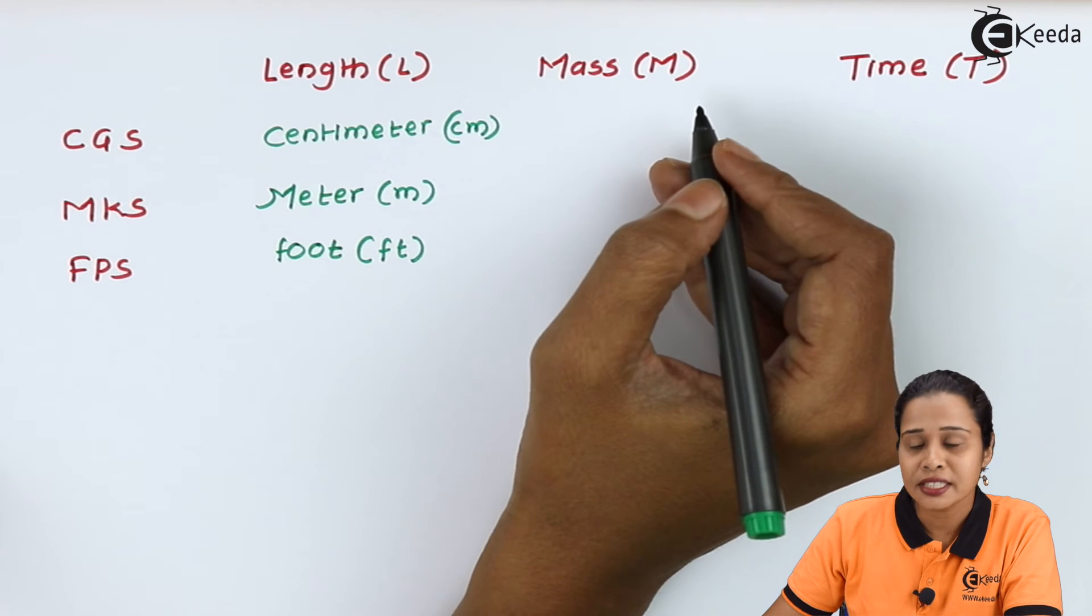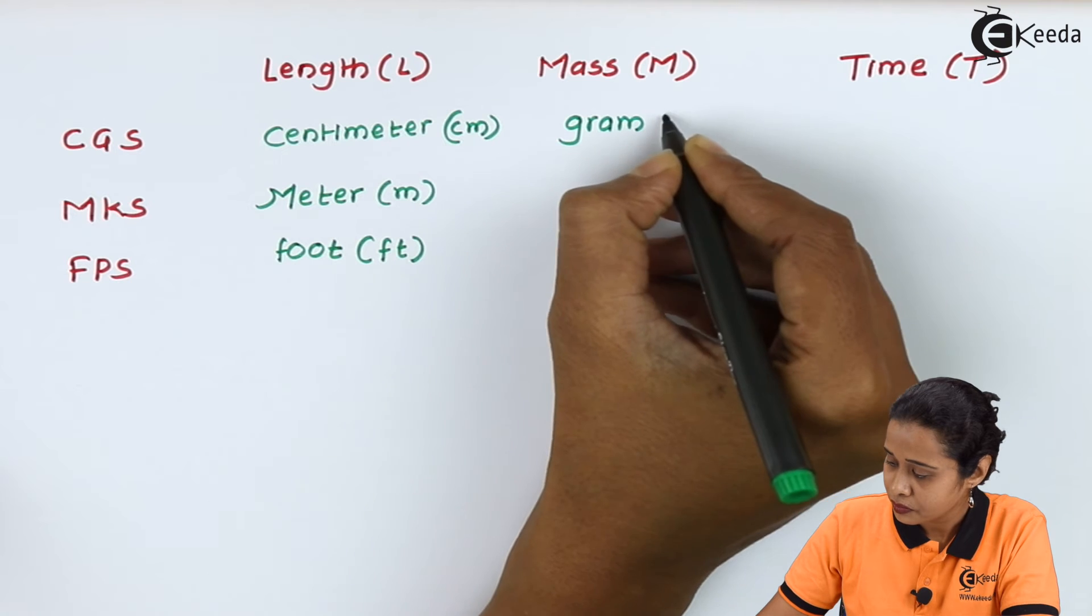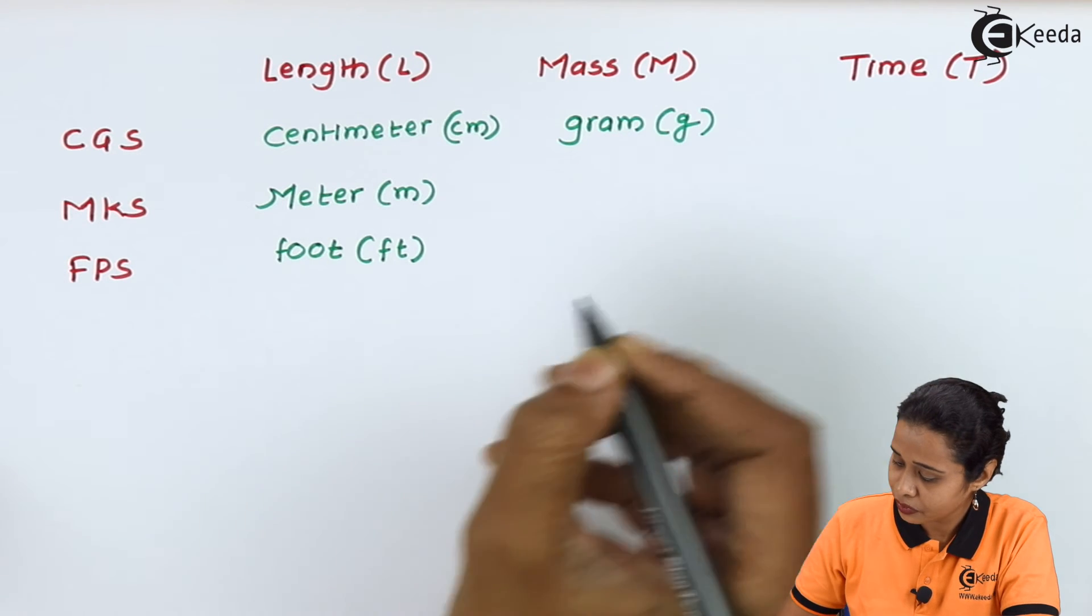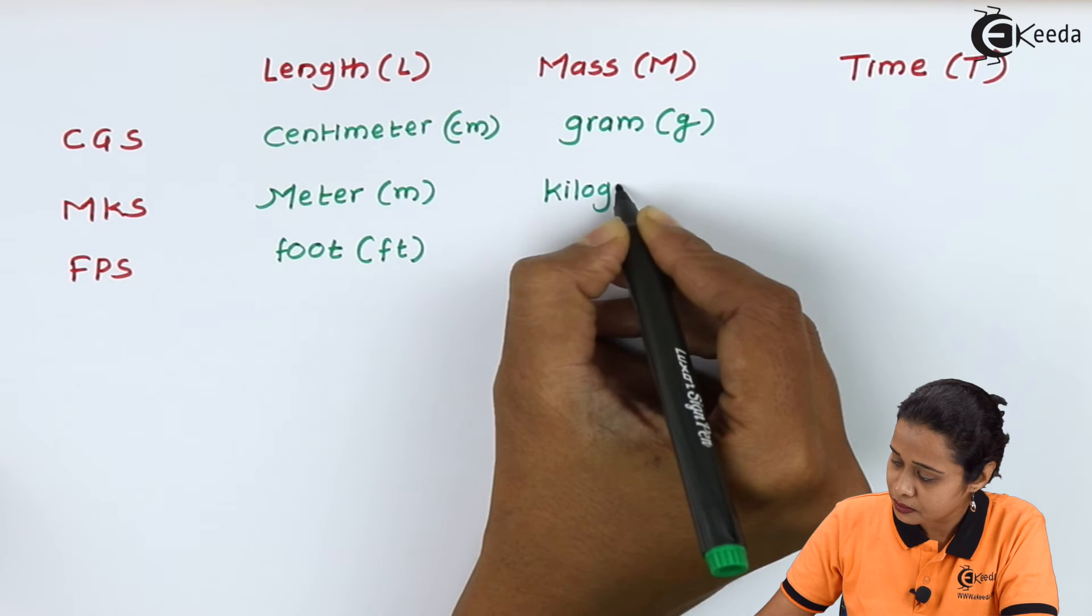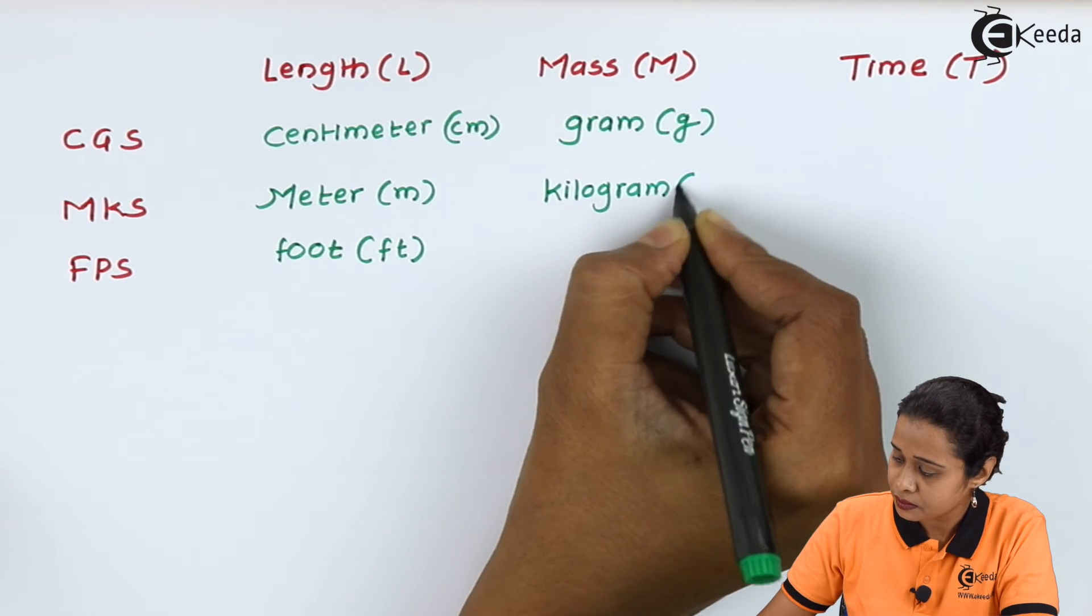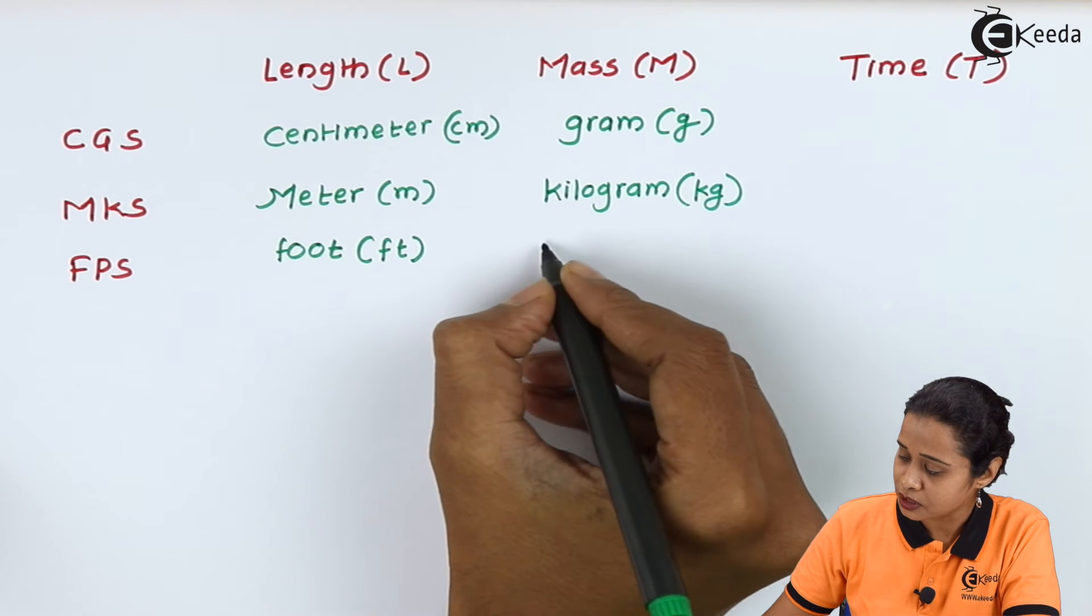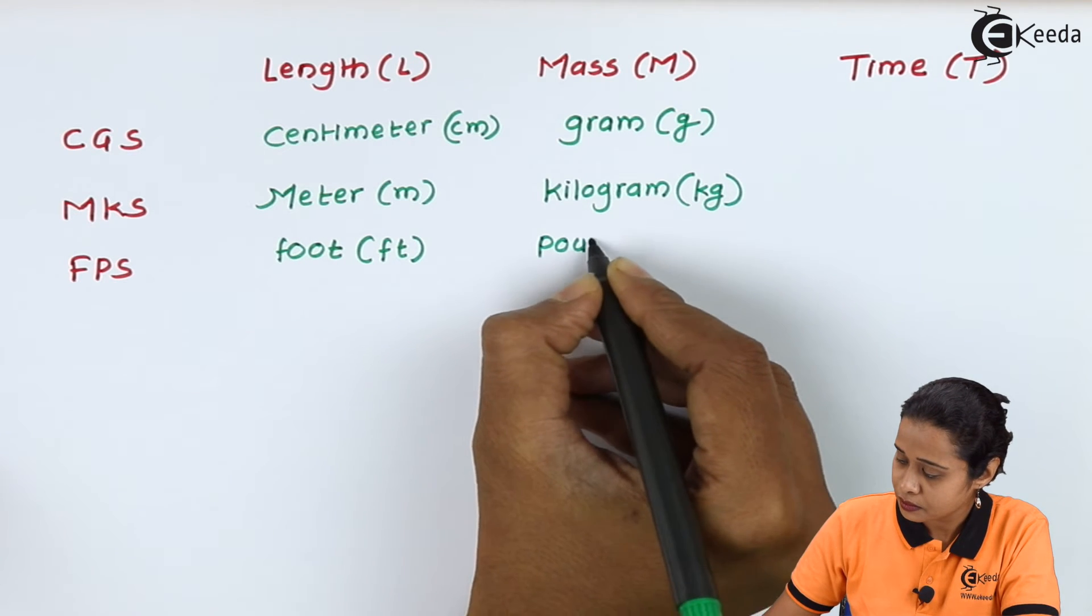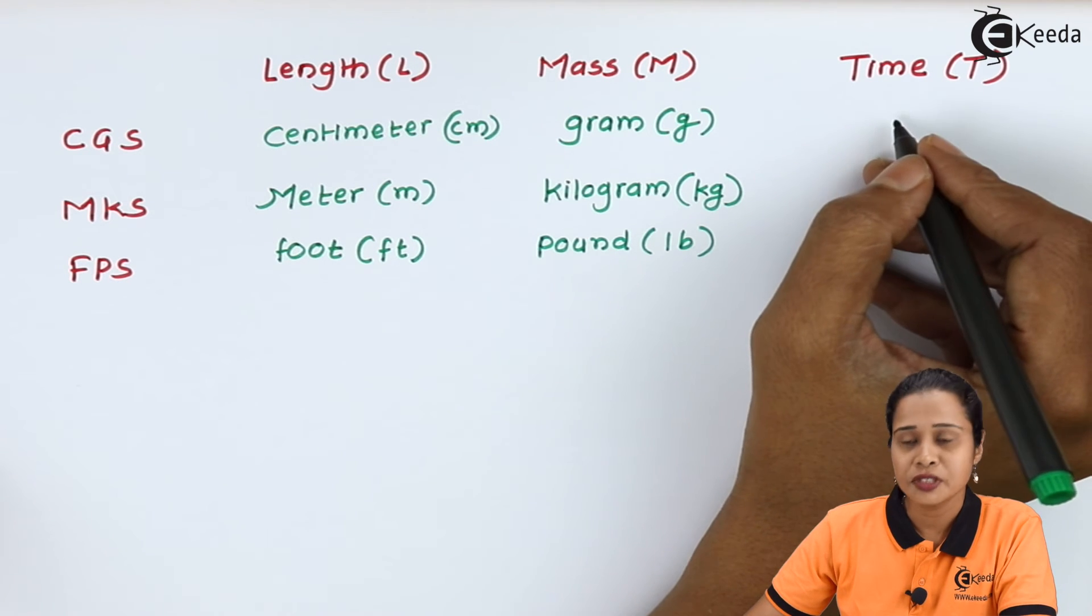Now in CGS system, we express mass in terms of grams. In case of MKS, we measure mass in kilograms. And in case of FPS, we measure mass in pounds.